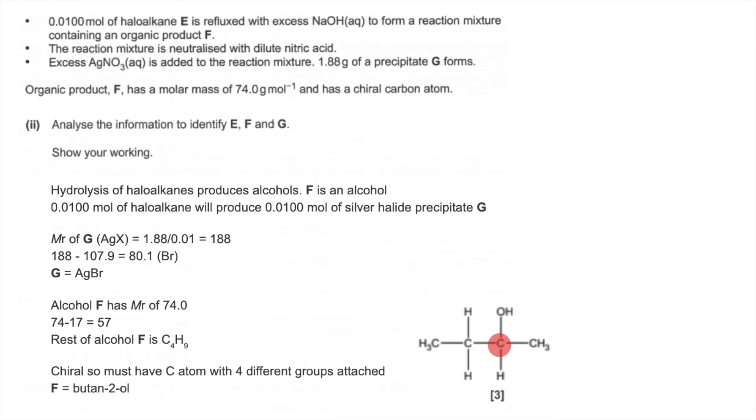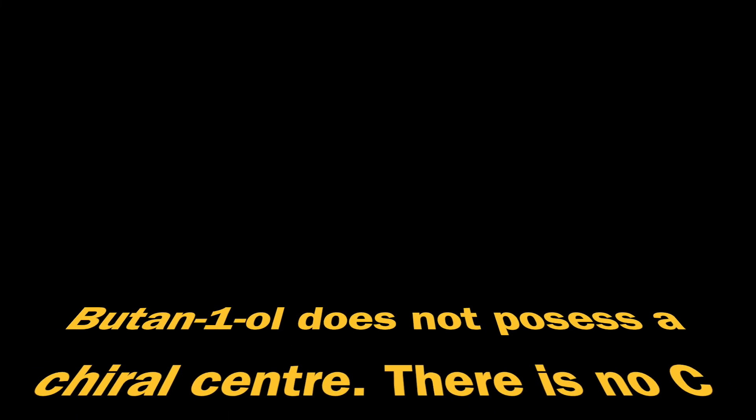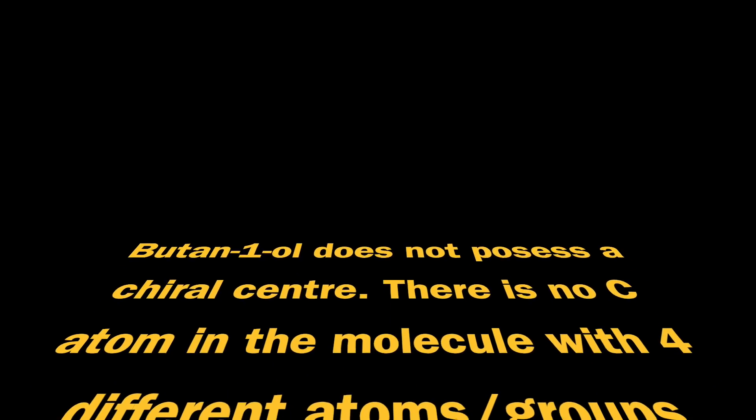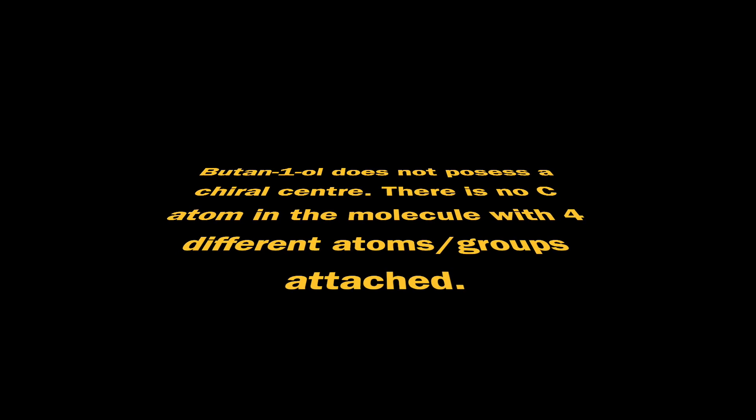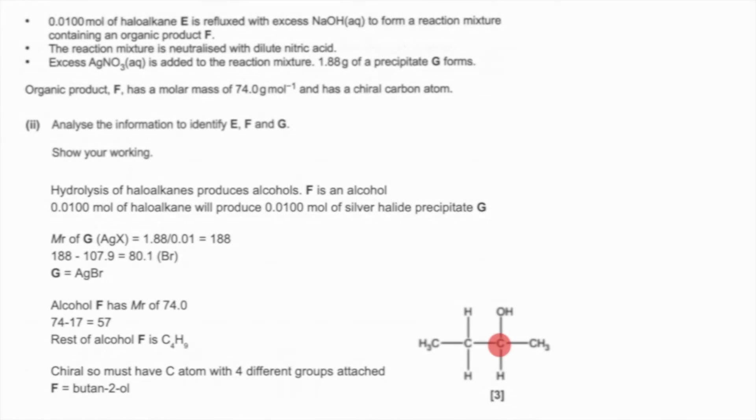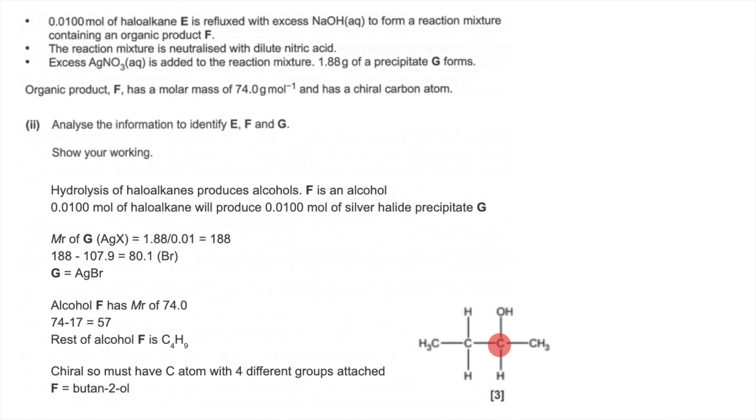And there's your chiral centre there. So you can see there's four different groups attached to that carbon. There's the OH group, there's the CH3 group off to the right, there's the H, and then there's the CH2, CH3, the ethyl group off to the left. So that's why that carbon's chiral.